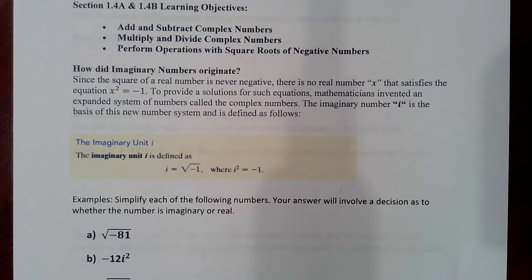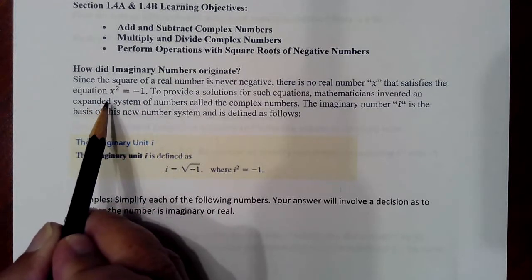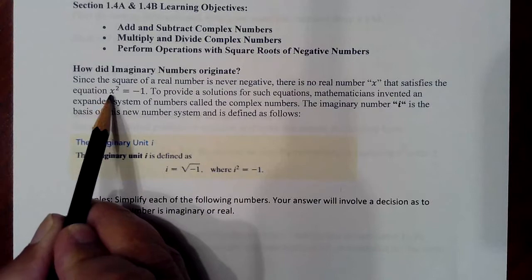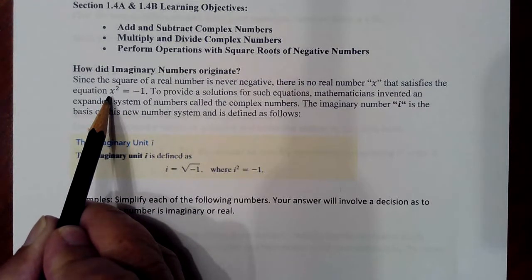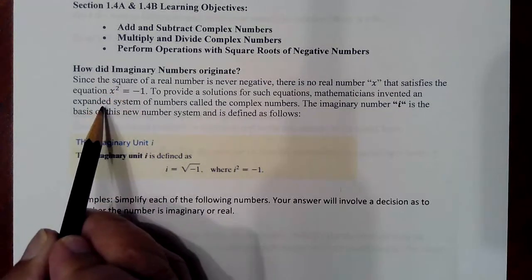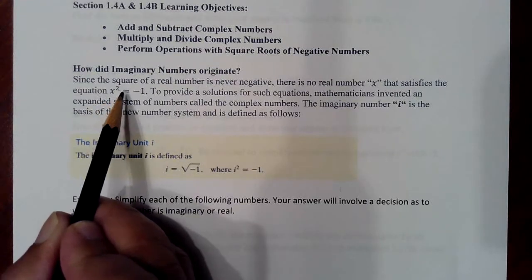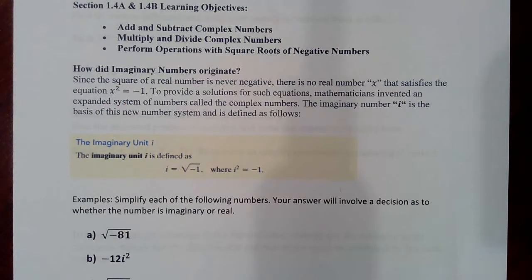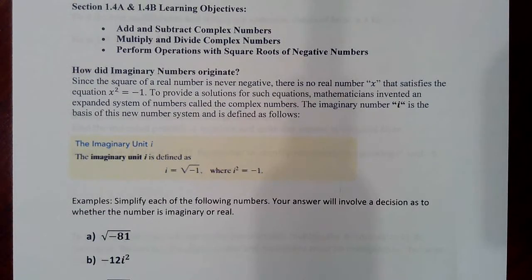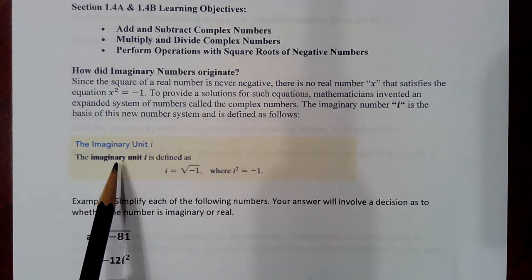Just a refresher on the definitions concerning imaginary numbers. These definitions evolved from equations like this, where mathematicians were trying to find solutions for an equation such as x squared equals negative one. It was found that there are no solutions for such an equation, not in the real number system, because there is no number you could square to get a negative. So since no such number exists within the real number system, a new number system was created called the imaginary number system.